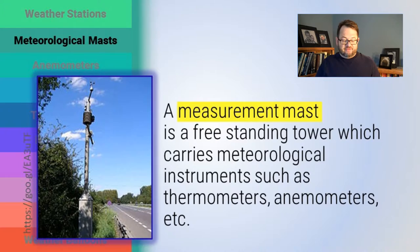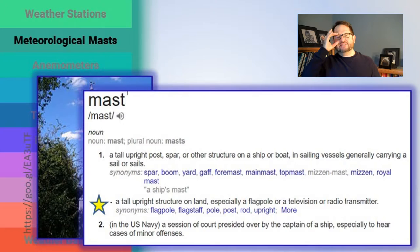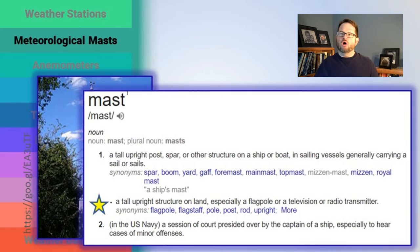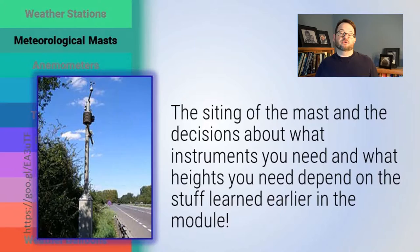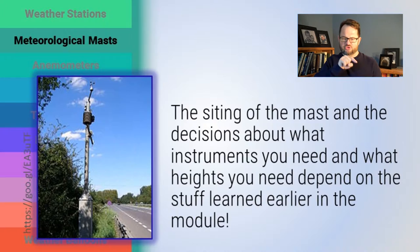That's why we have measuring masts, or meteorological masts. A mast is a freestanding tower which carries meteorological instruments like thermometers and anemometers. If mast is a word you're not familiar with, think of it as a tall upright structure — like a flagpole or a television antenna. They are sited in much the same way we have to site a weather station. The siting of the mast and decisions about which instruments to mount, at what heights, all depend on considerations from representativity to cost.